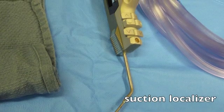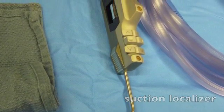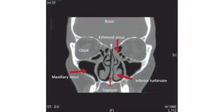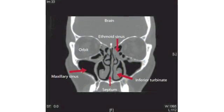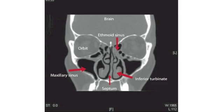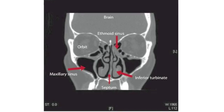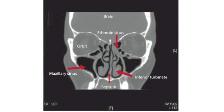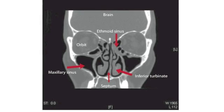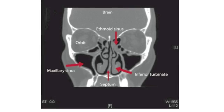A localization system is essential for revision surgery. This scan has some of the anatomy identified on a coronal view CT scan of the sinuses. This anatomy is important in performing the patient's sinus surgery.